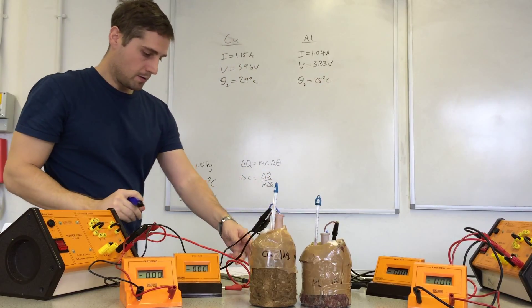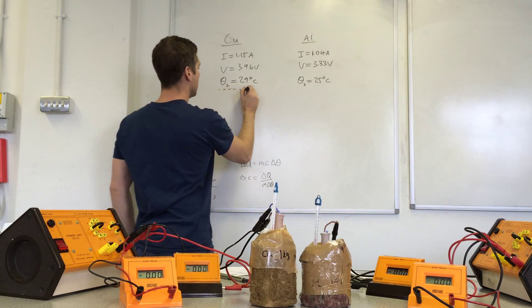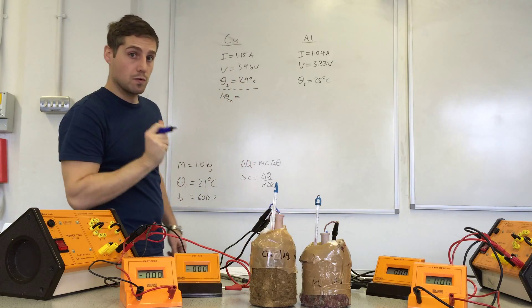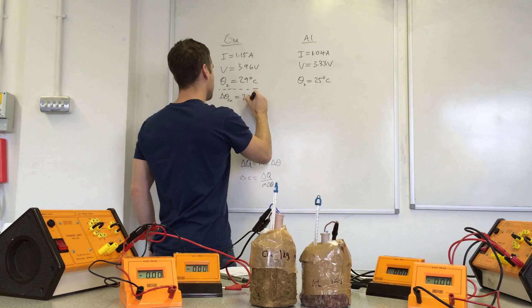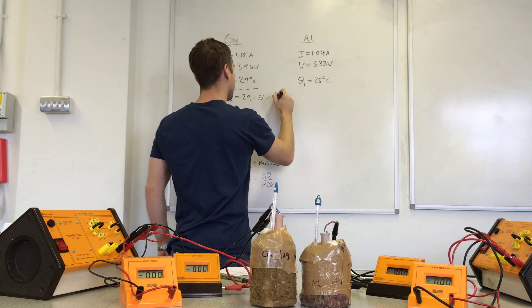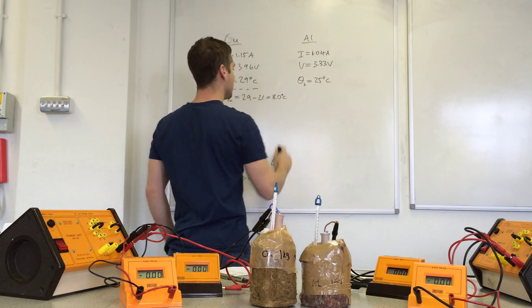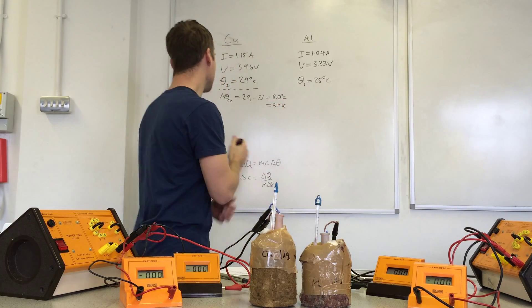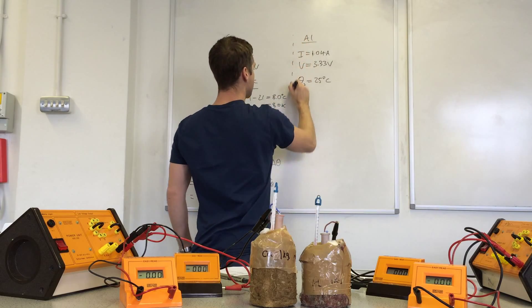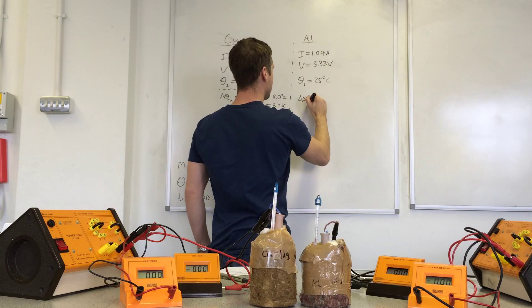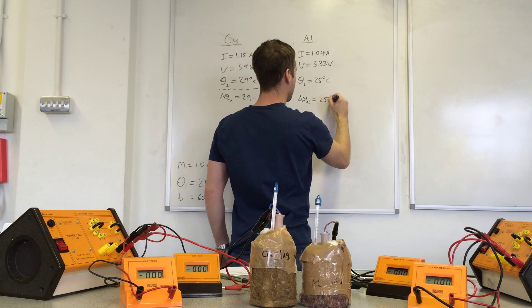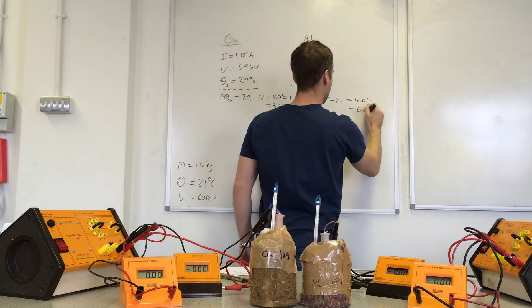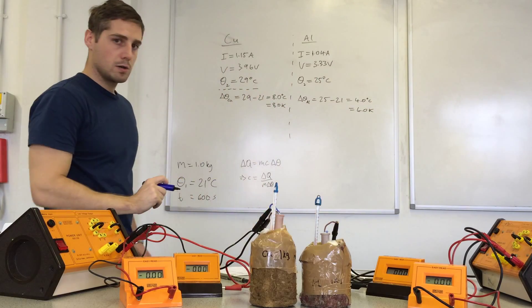Right, now we can work out some data. Delta theta for the copper block is 29 minus 21, which is 8 degrees C. Delta theta for aluminum is 4 degrees C.